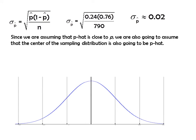Since we're assuming that p-hat is close to p, we're also going to assume that the center of the sampling distribution is going to be p-hat. We know that the center of a sampling distribution is the same as the population parameter. In this case, we're assuming the parameter is the same as the statistic, so by the transitive property we can assume our center is also 0.24. We can then fill in the rest of our sampling distribution using our standard deviation.